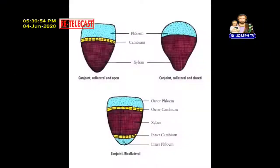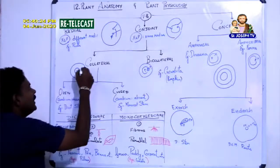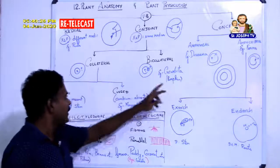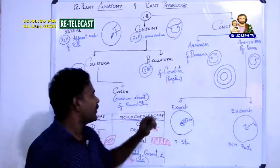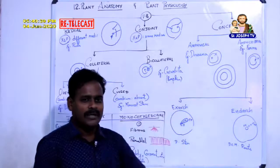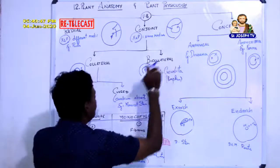Conjoint vascular bundles are further classified into collateral and bicollateral. In collateral, xylem is at the center with phloem around it — phloem in one position. In bicollateral, phloem is found both at the center and at the periphery — phloem in two positions. The example for bicollateral is Cucurbita — a pumpkin-like plant that includes bitter gourd, bottle gourd, etc.